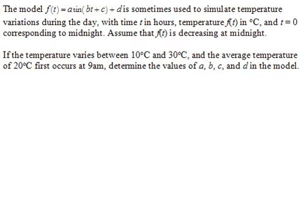Assume that f of t is decreasing at midnight. If the temperature varies between 10 degrees C and 30 degrees C, and the average temperature of 20 degrees C first occurs at 9 a.m., determine the values of a, b, c, and d in the model.